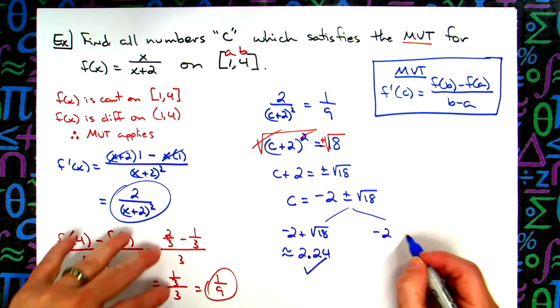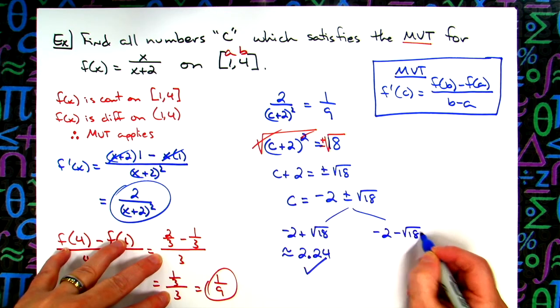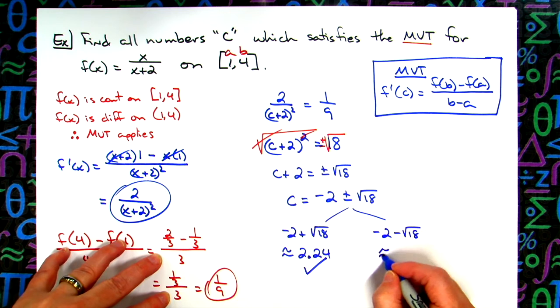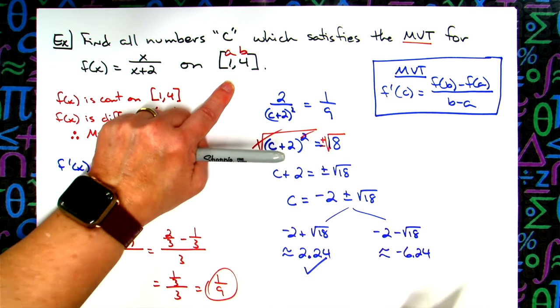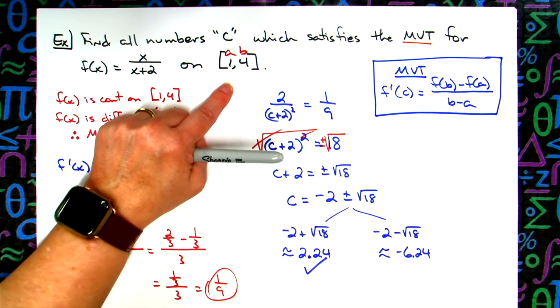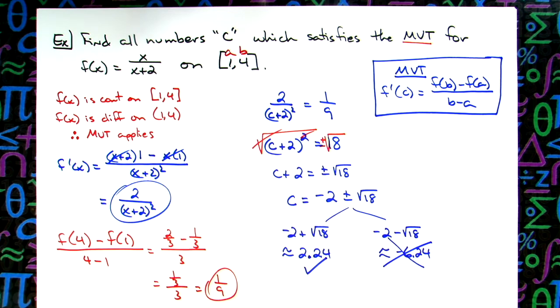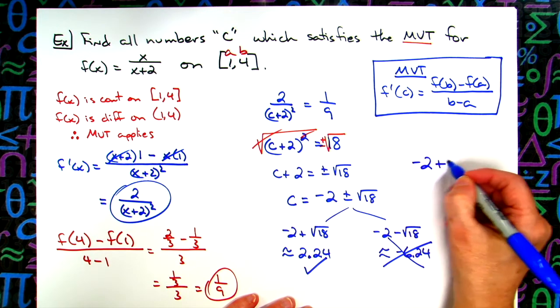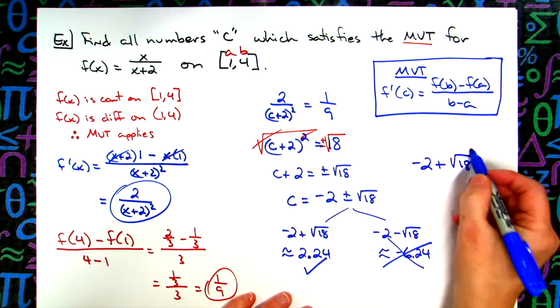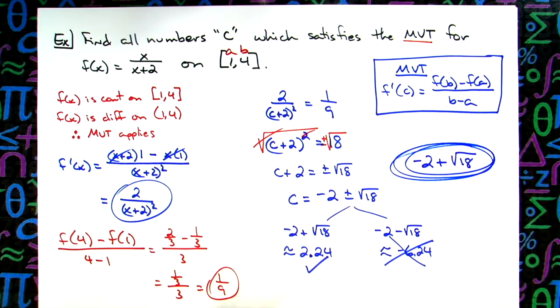If I take the -2 minus the square root of 18, this is roughly -6.24. That's outside of our interval, be it open or closed. But the open interval, it's definitely outside it. So we are not concerned with that value of c at all. So to answer the question, find all numbers c which satisfy the mean value theorem, we're going to have -2 plus the square root of 18 as a final answer for all values of c that satisfy the mean value theorem.